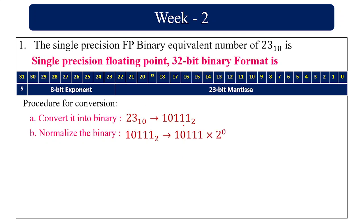So 10111 into 2 power 0. While normalizing, I am moving the decimal point, so it is going to be 1.0111 into 2 power 4 — counting 1, 2, 3, 4, so it is 2 power 4.